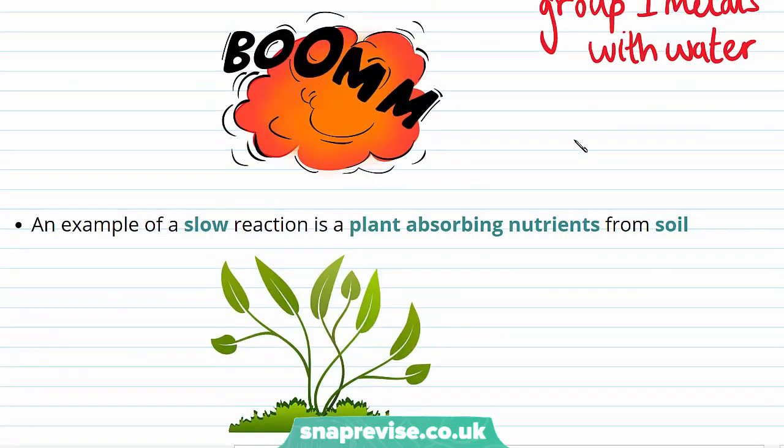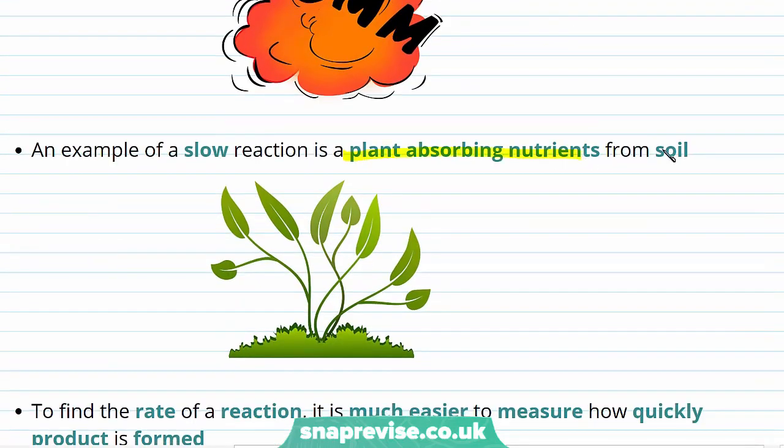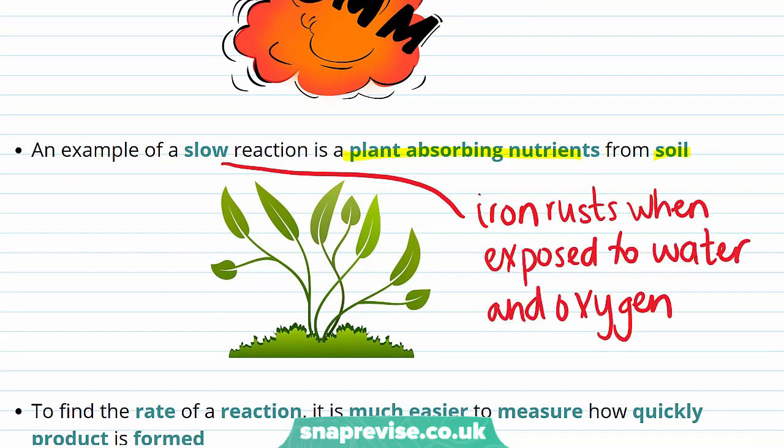An example of a slow reaction would be a plant absorbing nutrients from the soil, or the rusting process that occurs when iron is exposed to water and oxygen. The formation of rust on the surface of iron isn't instantaneous, but it will build up over days or weeks of exposure.